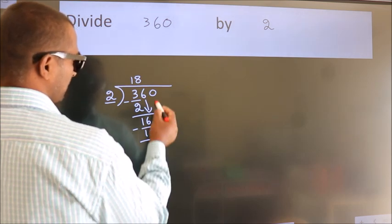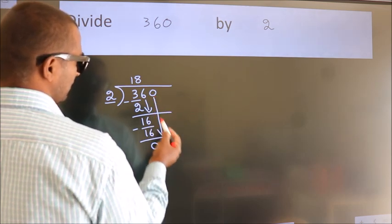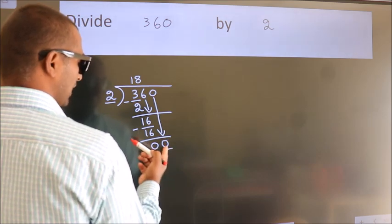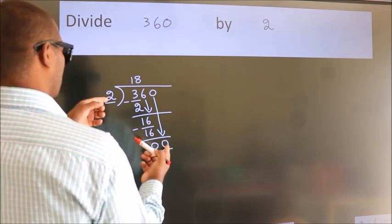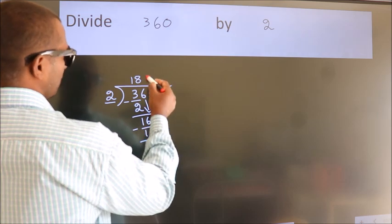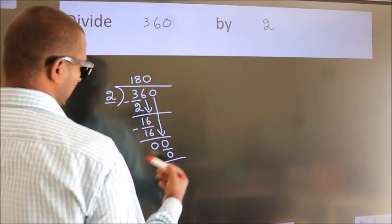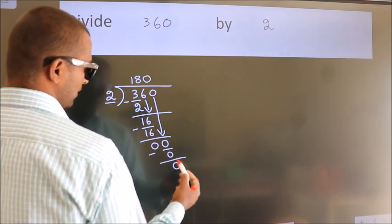After this, bring down the beside number. So 0 down. So 0. When do we get 0? In 2 table, 2 times 0. 0. Now we subtract. We get 0.